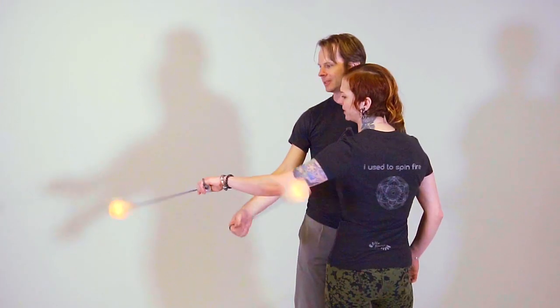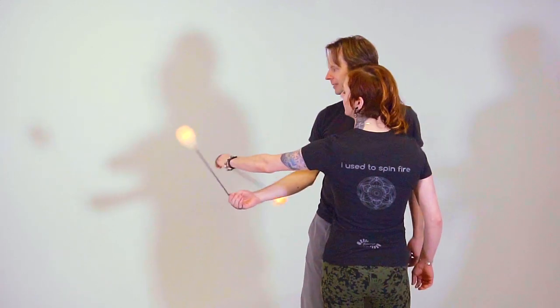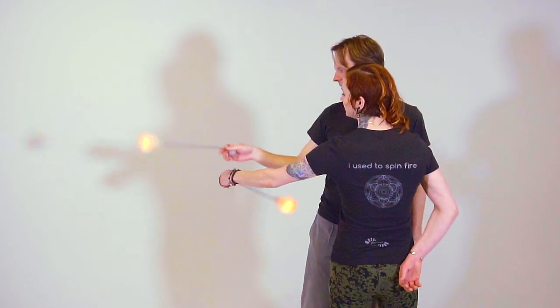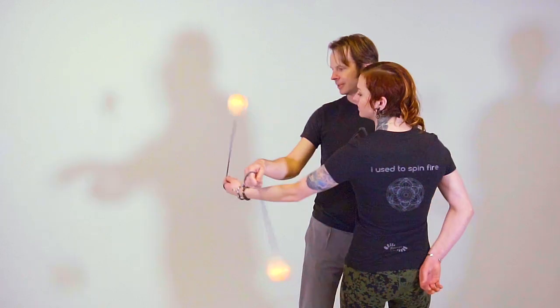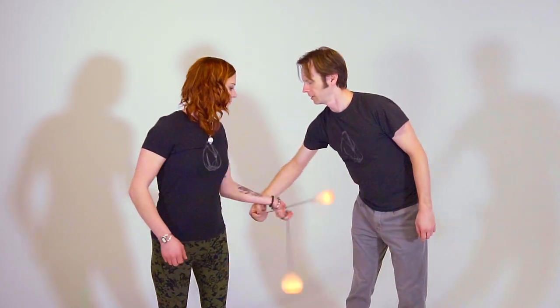To do the transition, it helps to know why these weaves are different in the first place. When performing the partner 3 beat, each partner is basically doing a normal 3 beat weave either forward or reverse. The only difference is their partner's hand is subbing in for one of their own. This means they're always performing two beats on their partner's side and one beat on their own. But in a 4 beat, each person is doing two beats on each side of the body.